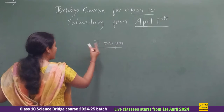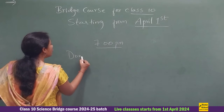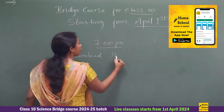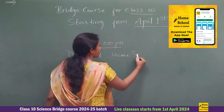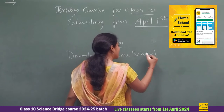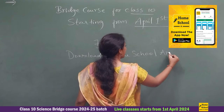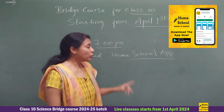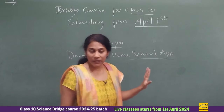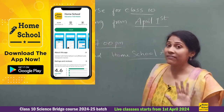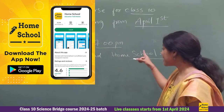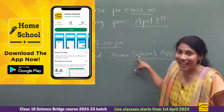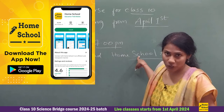To attend this live class, you first have to download the Homeschool application. Download the Homeschool application — the link is provided in the description. Don't forget: until and unless you download the Homeschool application, you can't attend the live class. The live class is not on YouTube, it is in the Homeschool app only. So you have to download this app through Google Play Store.